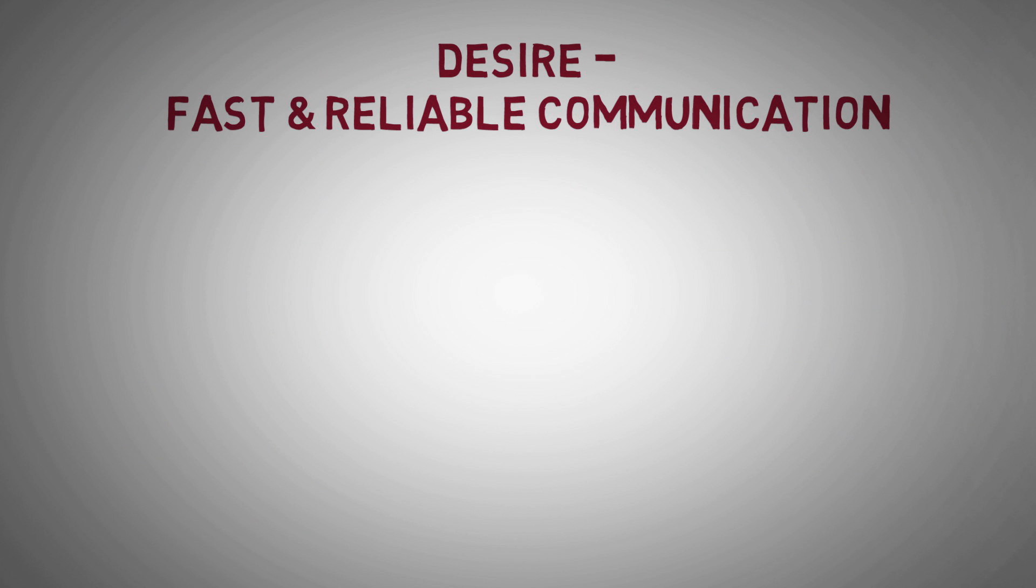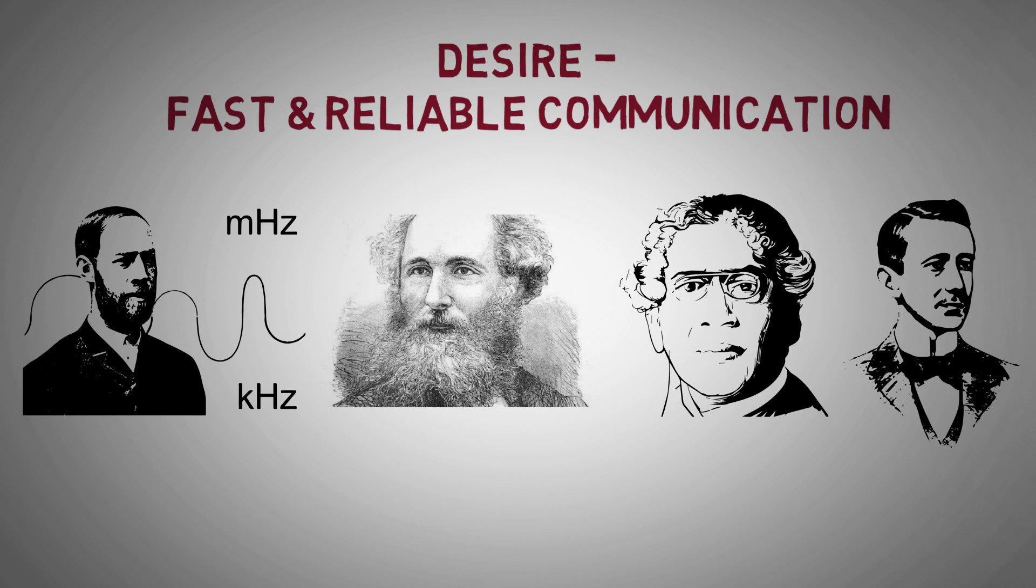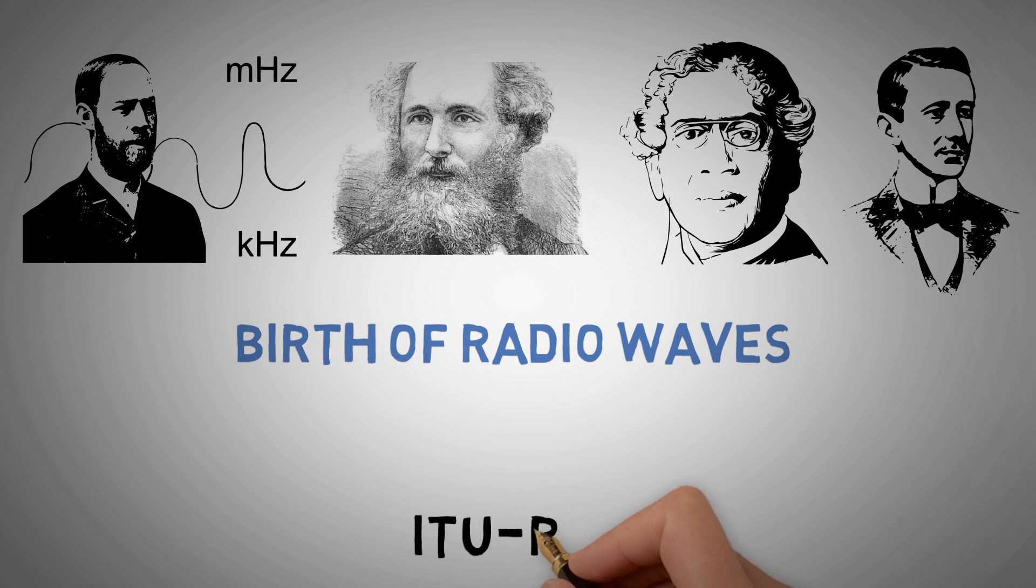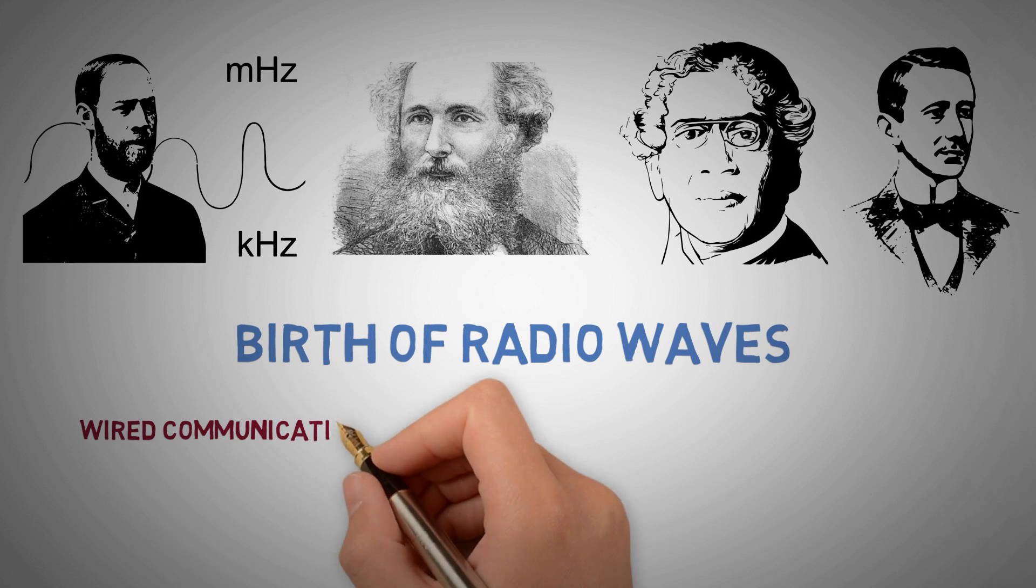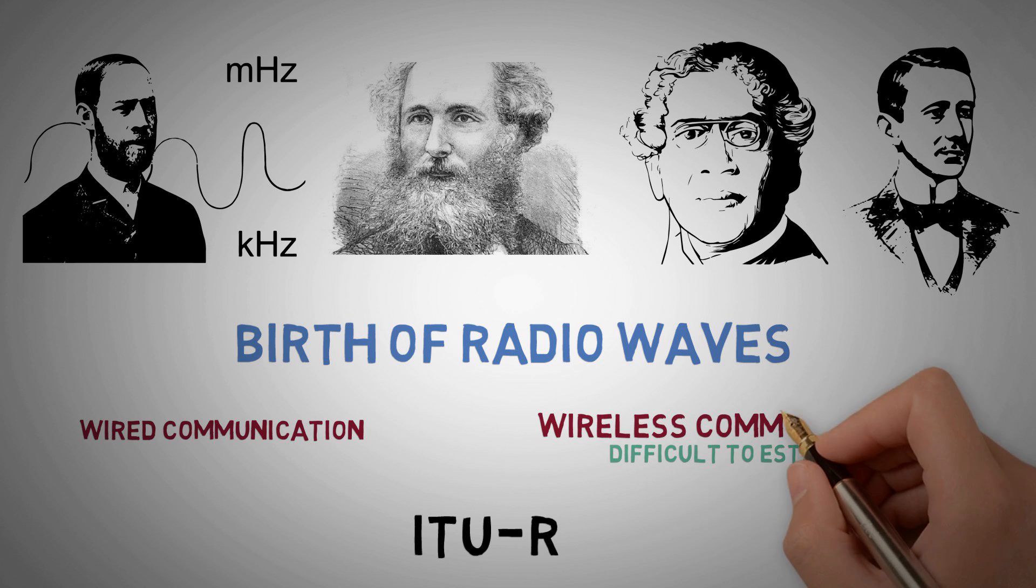But they were not enough. The desire for fast and reliable communication gave birth to wireless communication using radio waves. It wasn't easy in the beginning for ITU-R. Unlike wired communication it was very difficult to establish a full-fledged communication system and govern them.